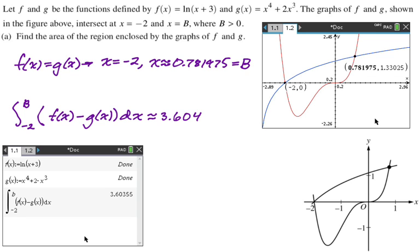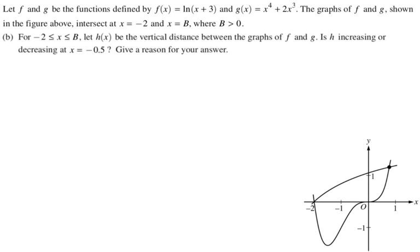Alright, that's pretty straightforward as far as area goes. So let's look at the next part. For negative 2 to b, let h(x) be the vertical distance between the graphs of f and g. Is h increasing or decreasing at x equals negative 0.5? So it's going to be important that we get the top and bottom curve correct here. For the area, we already had to work that out, so we know that the natural log is on top.